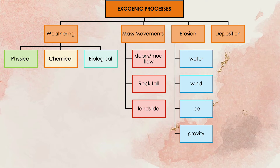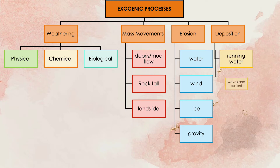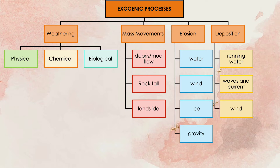The last exogenic process is deposition. Sediment is created through the process of weathering, carried away through the process of erosion, and then dropped in a new location through the process of deposition. The different agents of deposition are running water, waves and current, and wind. When wind and water slow down, they drop the sediments they are carrying.